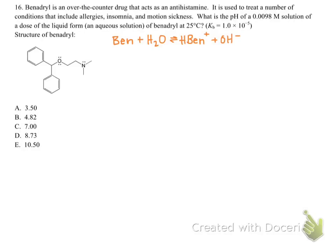This problem is notably similar to the previous problem, but now we're actually given the Kb, so this is more straightforward. Since Benadryl is a weak base, we're going to do what any weak base does. The base, abbreviated as Ben here, plus water, yields the conjugate acid and hydroxide. That's what every single weak base is going to do in an aqueous solution.